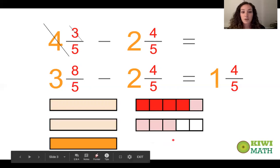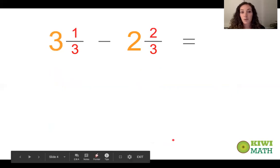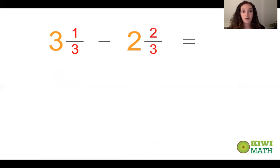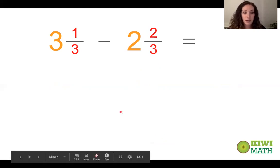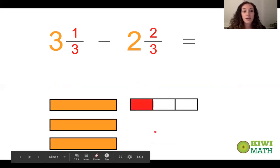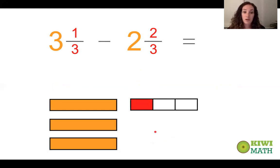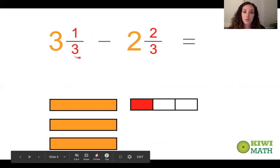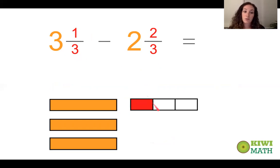Let's take a look at another example with a model, and we're going to slowly move towards moving away from the model. The model is going to help us understand what's going on with the numbers. So three and one third, and we want to take away two and two thirds. If we focus first on the fractional part — one third minus two thirds — we do not have enough fractional parts.